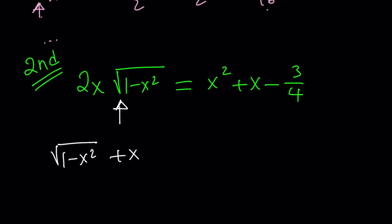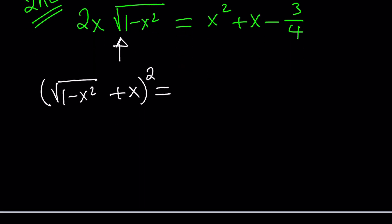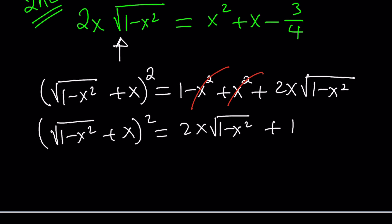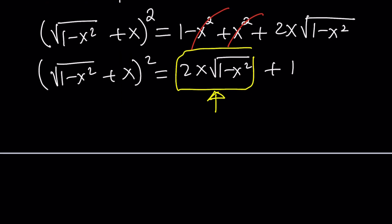I'll go ahead and square this expression. And that's going to give me a squared plus b squared plus 2ab. Do you see what I'm talking about? That's what I'm trying to get at. Now we're going to cancel out the x squared. Square root of 1 minus x squared plus x quantity squared is equal to 2x times square root of 1 minus x squared plus 1. Now since I'm after this, because that's what I have on the left-hand side of my equation, let's isolate this by subtracting 1 from both sides. That's going to equal the square root of 1 minus x squared plus x quantity squared minus 1.